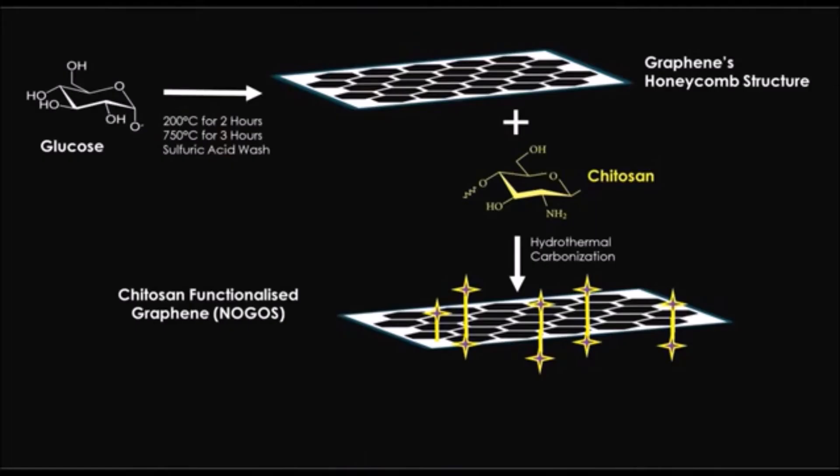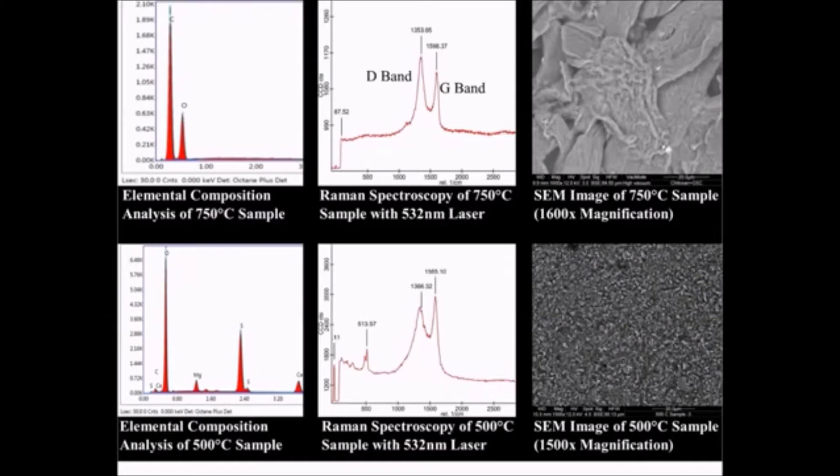The NOGOS is simple to produce using just a few simple steps and heating cycles, and Raman spectroscopy and SEM imaging also identified that chitosan functionalized graphene had been produced.